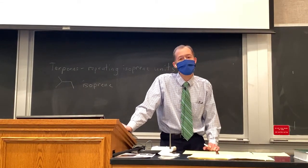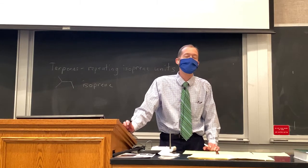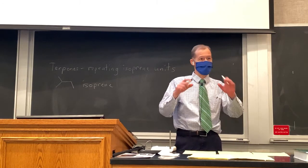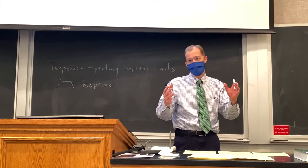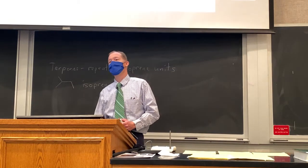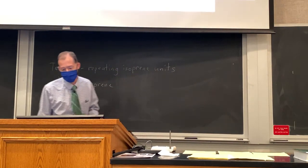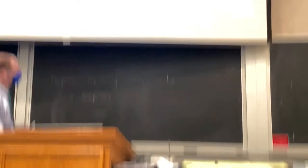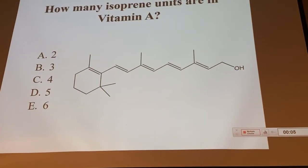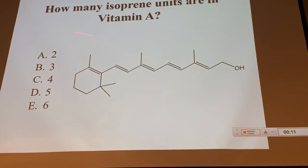One important skill with terpenes is being able to count and locate the isoprene units — looking at a terpene structure and determining how many isoprene units there are and where they're located. We're going to practice this skill. First, notice we've drawn vitamin A. In addition to being a fat-soluble vitamin, vitamin A is also a terpene comprised of isoprene units. Please talk to your neighbor and determine how many isoprene units are in vitamin A.